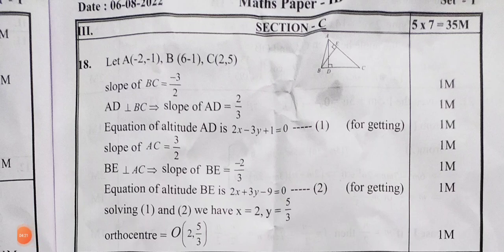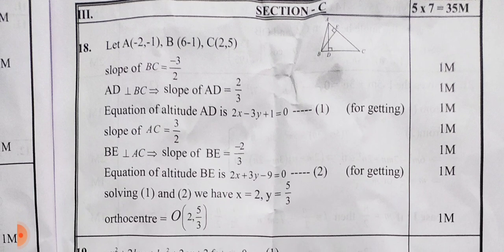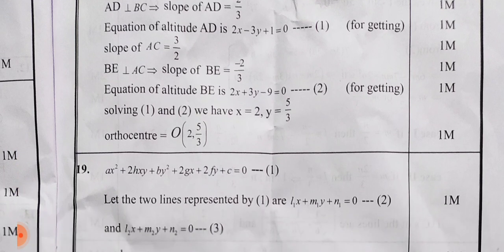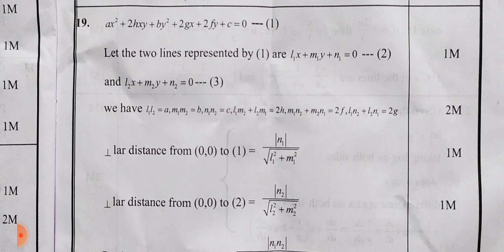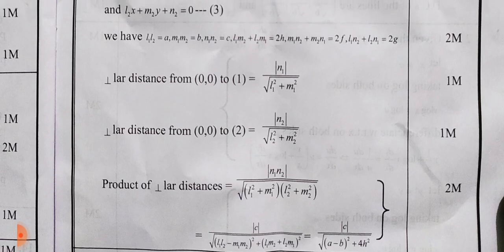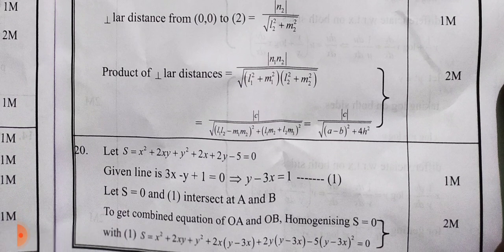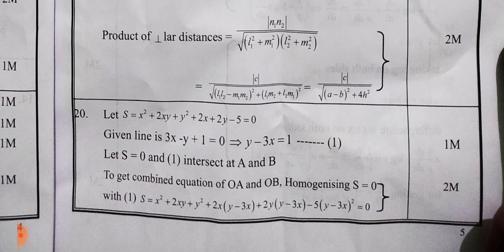Students, the next page shows Section C. In Section C, there are only 7-mark problems. You have to show full marks in the 18th question. Next, the 19th one is shown in Section C — you have to show full marks. Next, the 20th one is shown in Section C — you have to show full marks.